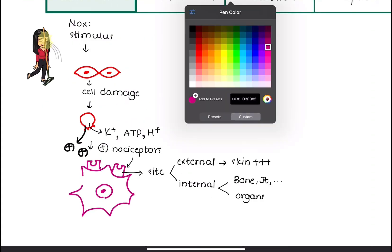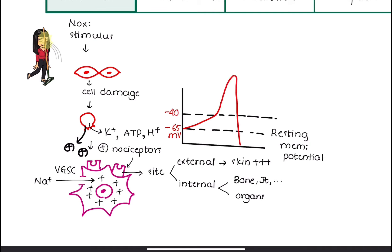Stimulations of nociceptors open the voltage-gated sodium channels, allowing sodium ions to pass into the cell. This raises the resting membrane potential of a neuron from –65mV to –40mV, leading to depolarization and action potential formation. This process is known as transduction.